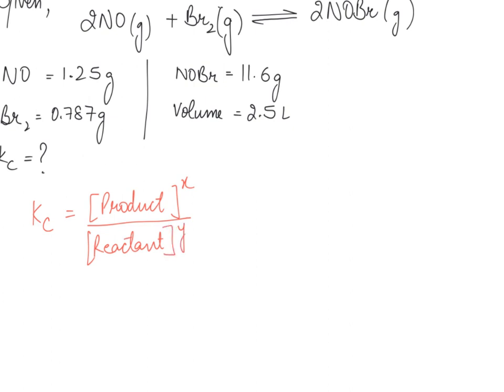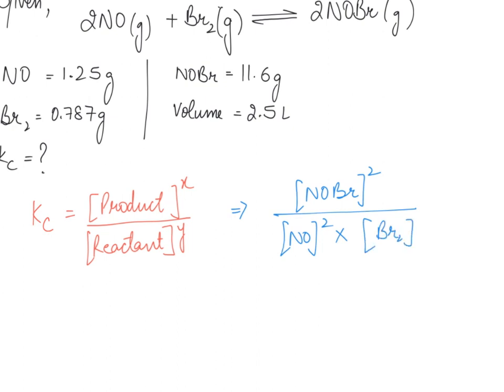In this equation, the product is NOBr with a coefficient of 2, so it is raised to the power 2. The reactants are NO with coefficient 2, and Br2. So Kc equals concentration of NOBr squared divided by concentration of NO squared multiplied by concentration of Br2.